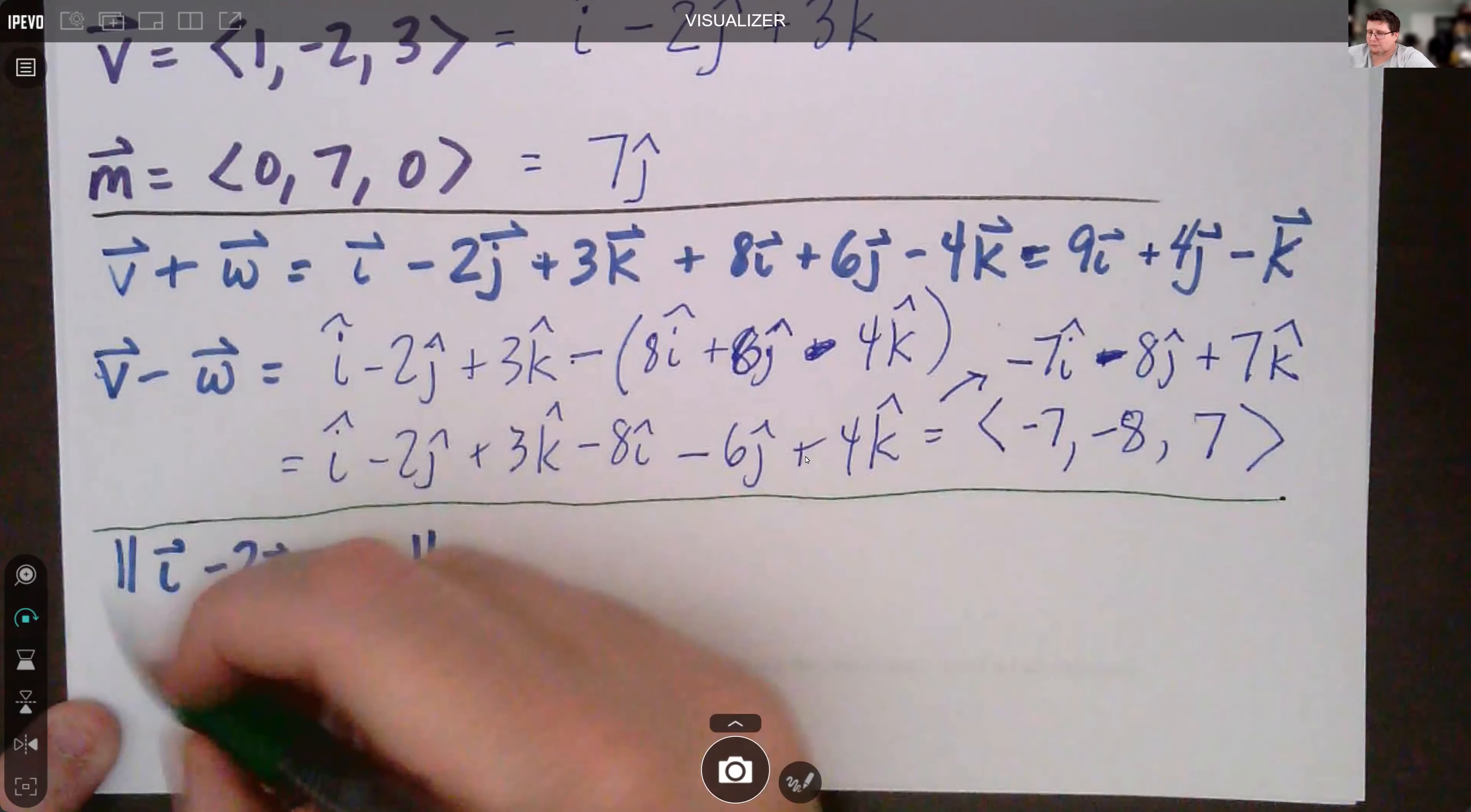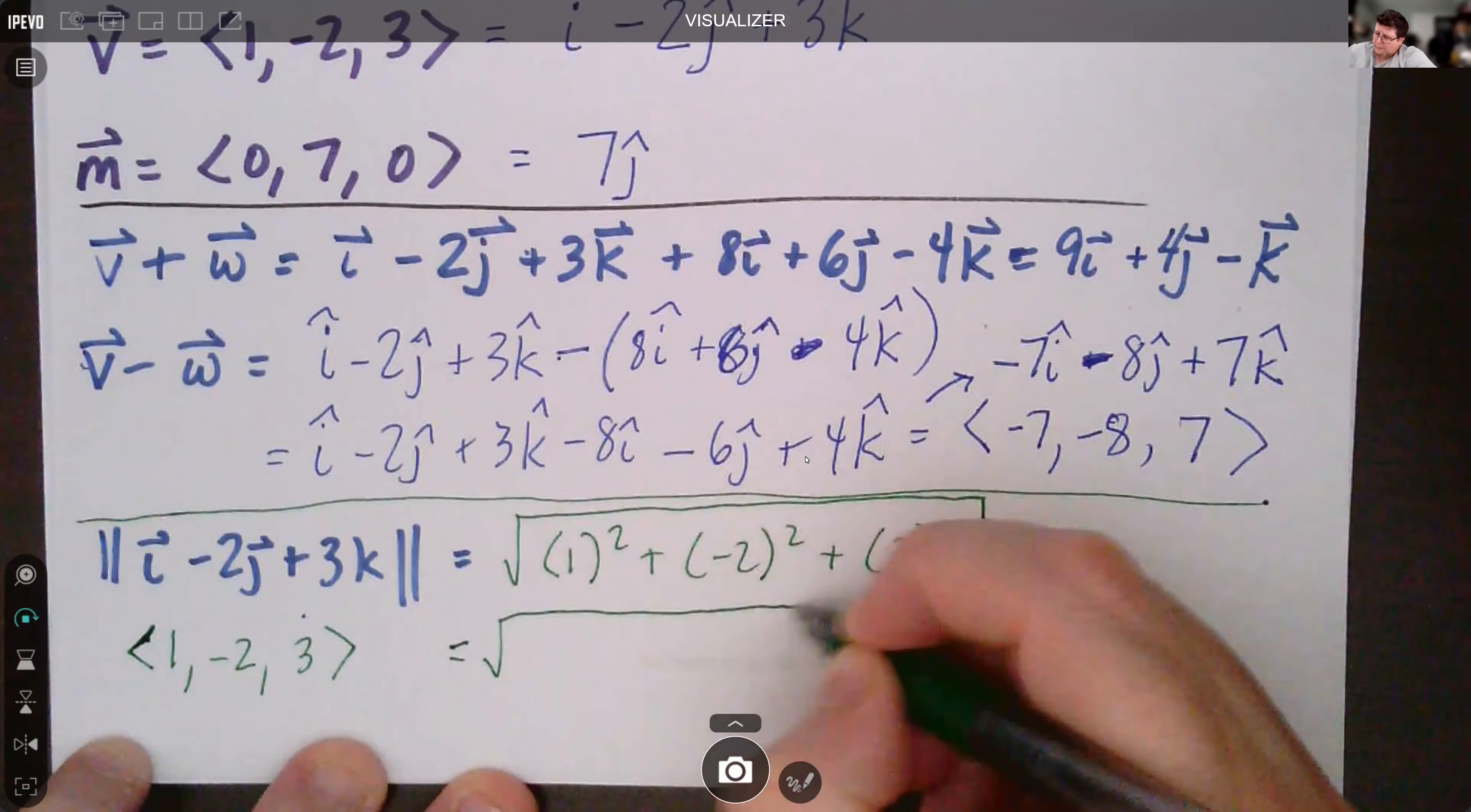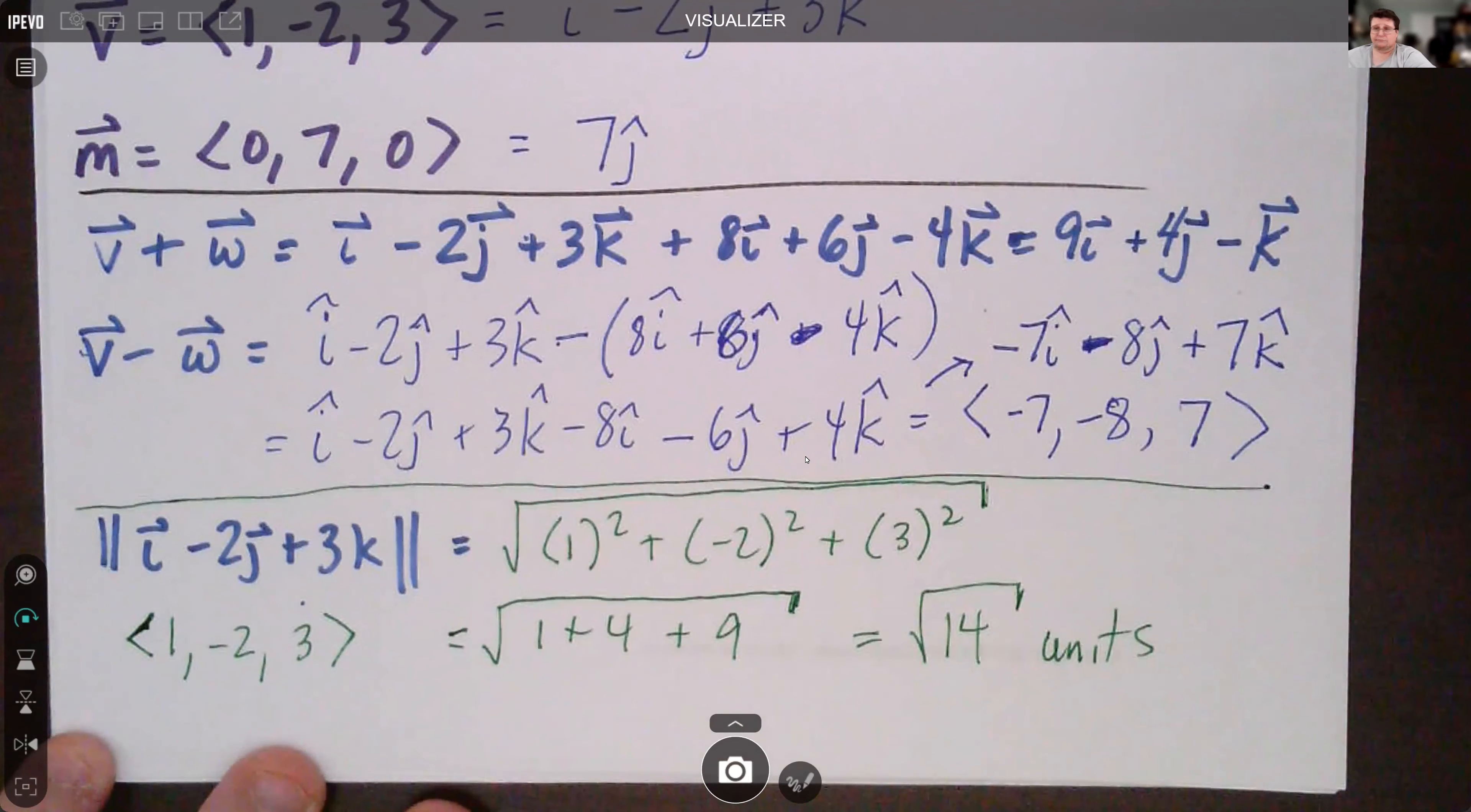If we're finding the norm, remember this is like writing 1, negative 2, and 3. The norm of it was to take each value and square it, add them together, and then take the square root. It's the distance formula. I've got the square root of 1 plus 4 plus 9. The magnitude is the square root of 14 units, whatever the units are. Whenever I'm doing square root, not everyone does it, I bring this little tail down to indicate the radical sign has ended. That's just individual notation.